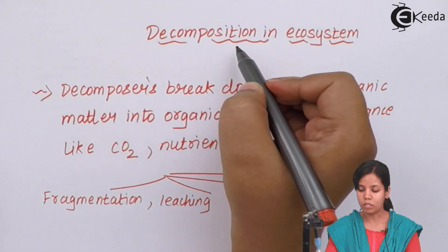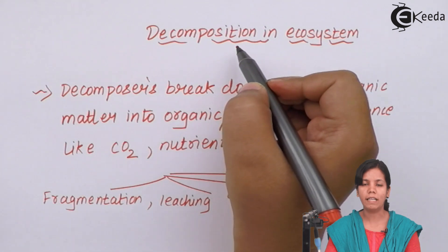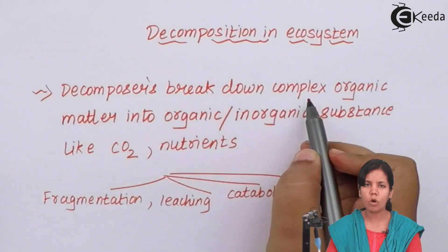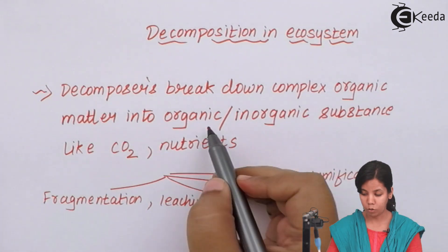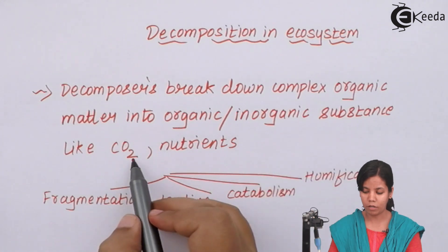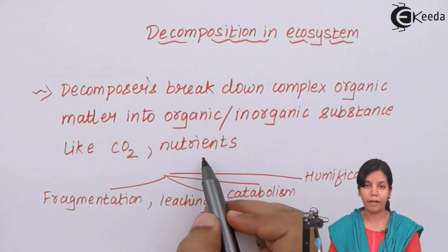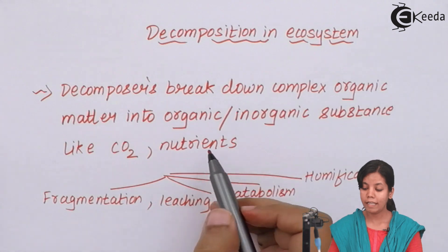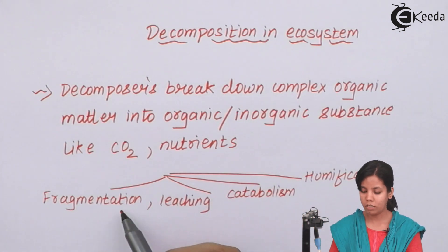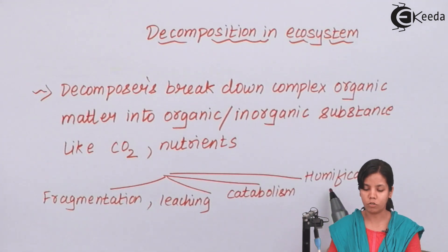Decomposition in ecosystem or the decomposers involved in ecosystem: decomposers break down complex organic substance or compound organic substances into organic or inorganic molecules, basically into simpler substances like carbon dioxide, nutrients like carbon, nitrogen, sulfur, etc. The steps in decomposition are basically four: fragmentation, leaching, catabolism, and humification.